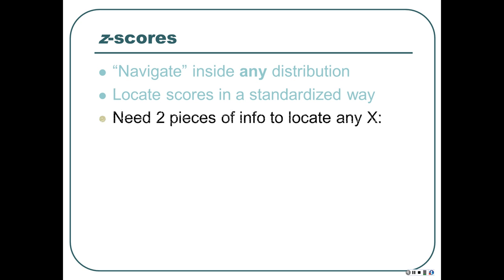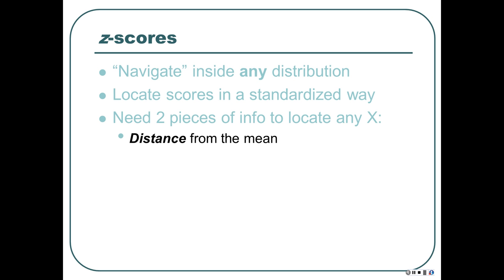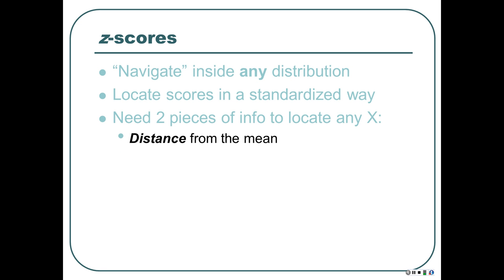You need two pieces of information to locate any X — a raw score, any specific value from a specific observation inside a distribution. You need the distance from the mean and you need the direction. The distance needs to be measured in Z-scores, in standard deviation units — same thing. And the direction is just plus or minus.